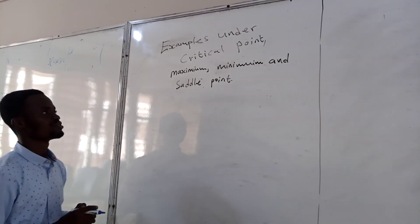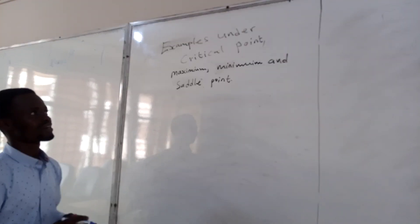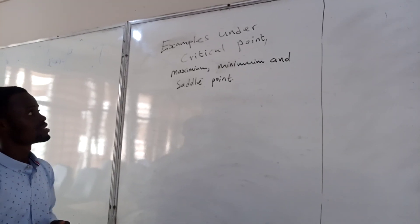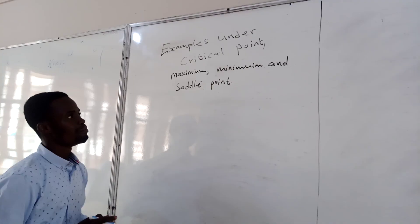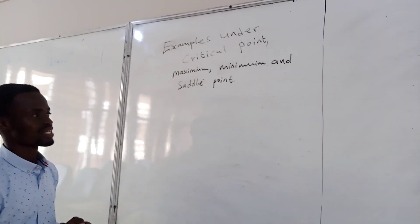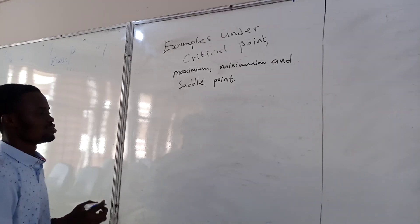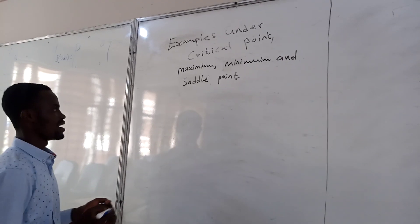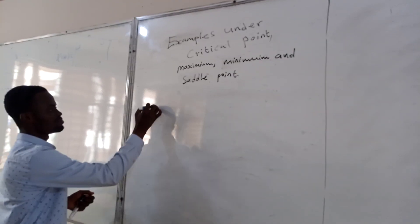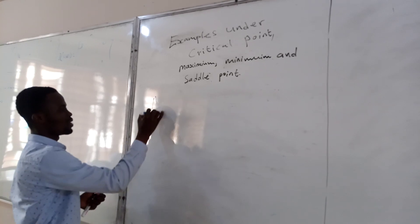We are here to find examples of critical points: maximum point, minimum, and saddle point. So we start with a proper example. Let's look at Example 1.